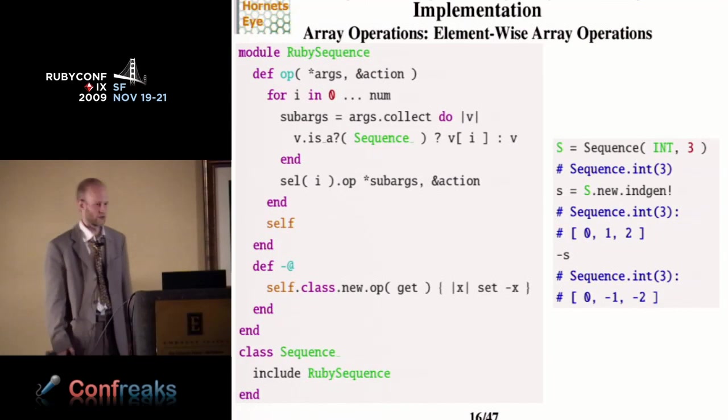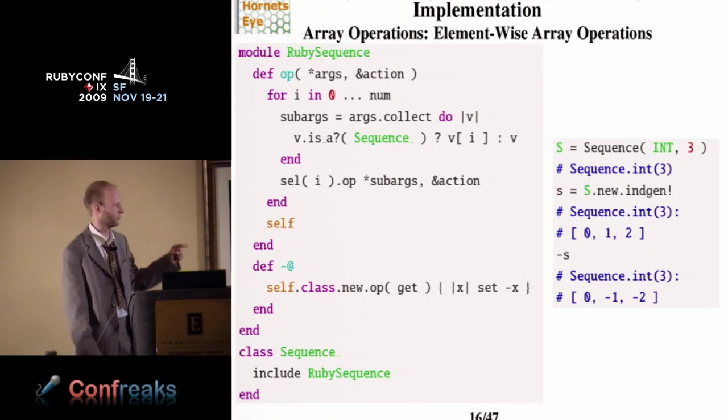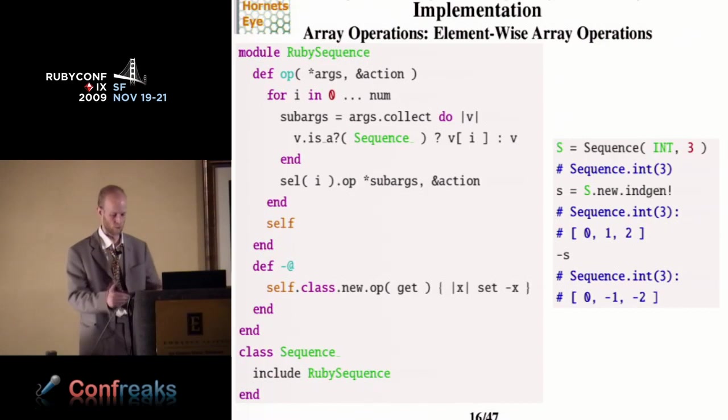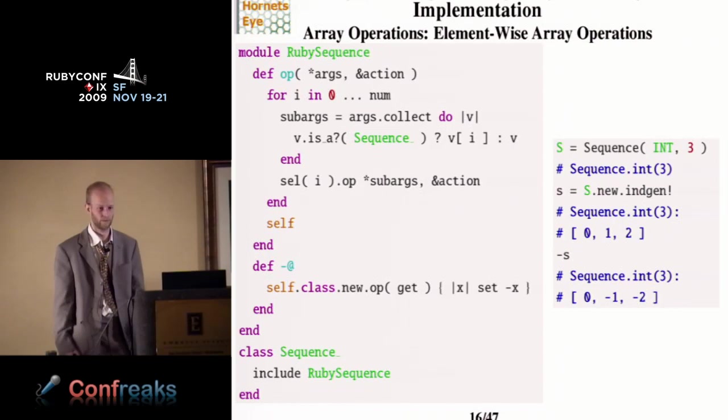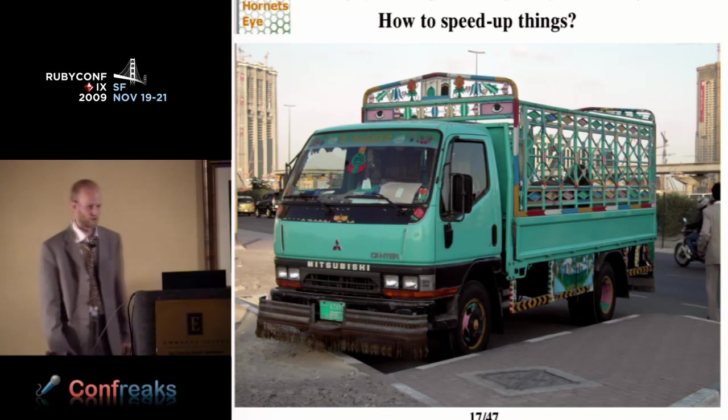And then for arrays, you also define the op method, and it simply loops over all the elements, and calls op recursively. And if one or more arguments are arrays as well, you also iterate over all the elements of that array. And if you do it like this, you can actually implement the negation operator exactly the same way as for the scalar. And on the right side, you see some example usage where I create an index array with values 0, 1, and 2. And if I negate that array, I get 0, minus 1, and minus 2.